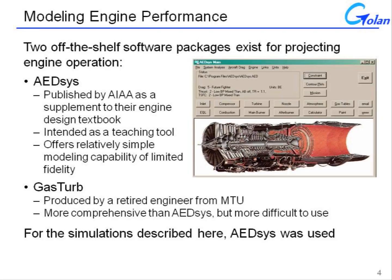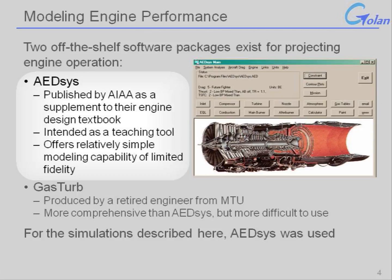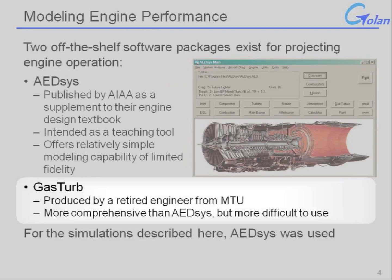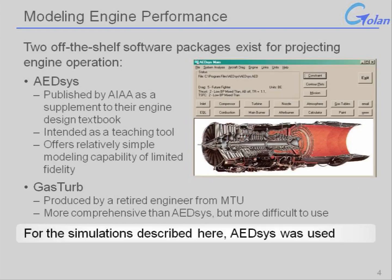There are a couple of off-the-shelf software packages available publicly for modeling engine performance. The first is ADSIS, published by AIAA — the American Institute of Aeronautics and Astronautics — as a supplement to their jet engine design textbook. It's intended as a teaching tool for how to design and make trades on jet engine performance. It's a relatively simple model, but it gives you the trends you really need for an aircraft performance calculation. The other tool is GasTurb, produced by a retired engineer from MTU Germany. It's much more comprehensive but more difficult to use. For the simulations described here, ADSIS was used.